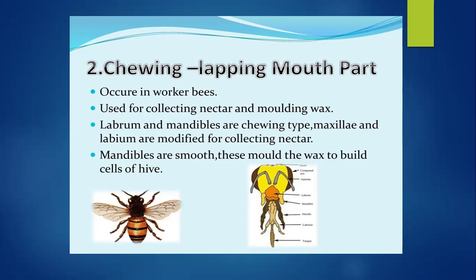In the worker bee, the labium gets modified and the tongue is protruded. This modification of the maxillae and labium for collecting nectar results in chewing and lapping mouthparts.